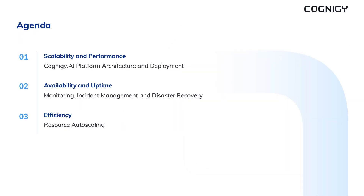Firstly, I will talk about scalability and performance. We will look at how Cognigy implements microservices architecture and how our development and deployment processes ensure performance and security of our platform. Then we will explore availability and uptime, our monitoring system, incident management, and disaster recovery processes. Lastly, we will discuss platform efficiency and how we optimize resource utilization with autoscaling mechanisms.